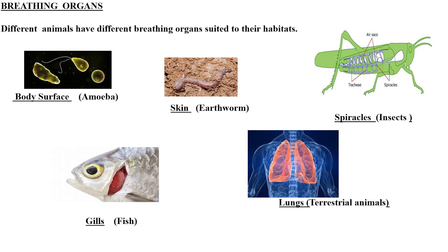Animals like the earthworm use their moist skin as a breathing organ. An adult frog, when in water, also breathes through its moist skin. Insects like grasshoppers, cockroaches, mosquitoes, and flies have special organs called spiracles — tiny air holes found along the sides of the insect's body. Air enters through these spiracles and is expelled out through the same structures.